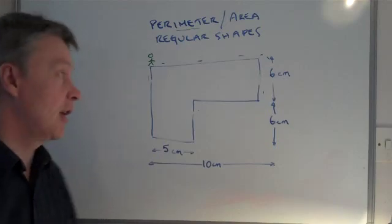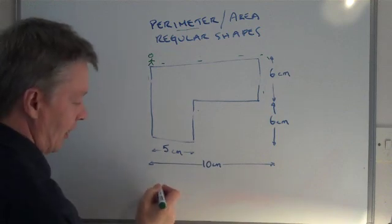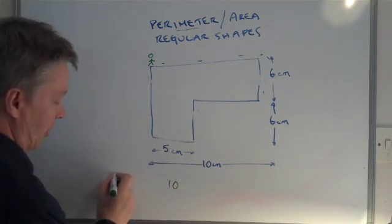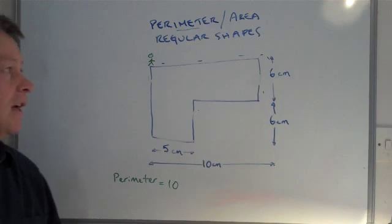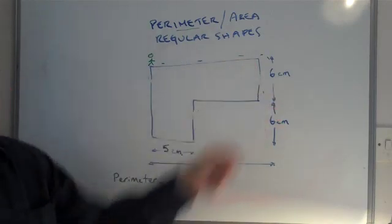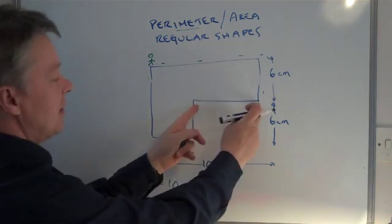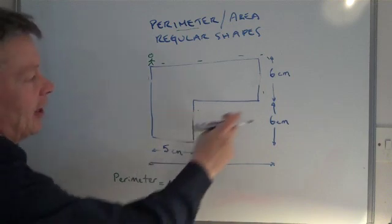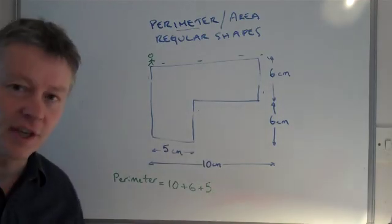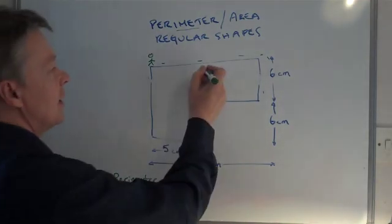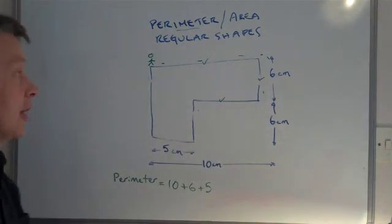So what do I know about this shape? I know that this distance across the top here is 10 centimetres, so I can put 10 centimetres there. And I'm going to work out the perimeter. I also know that distance there is 6 centimetres, so I can add 6 to that. I know also that this distance here is 10 take away 5, which is 5 centimetres. It's probably a good idea to tick as you put the distances down there, just to make sure that you cover all the different distances.